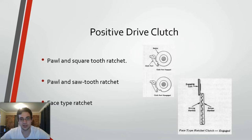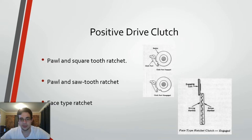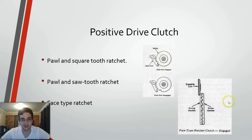This is compared to a positive drive clutch. There are three main types of positive drive clutches: the paw and square tooth ratchet, the paw and saw tooth ratchet, and the face type ratchet. As can be seen on the screen, the paw and square tooth ratchet are engaged and disengaged using this little ratchet, and that square tooth engages with the shaft. This other mechanism will be moved with the drive shaft. Same with the face type ratchet.